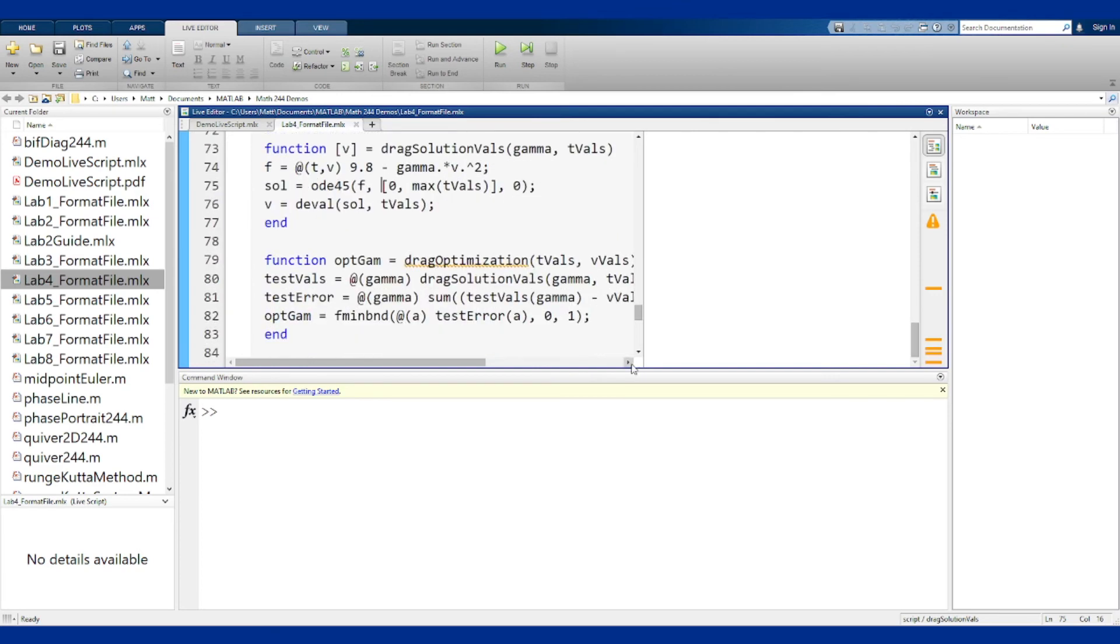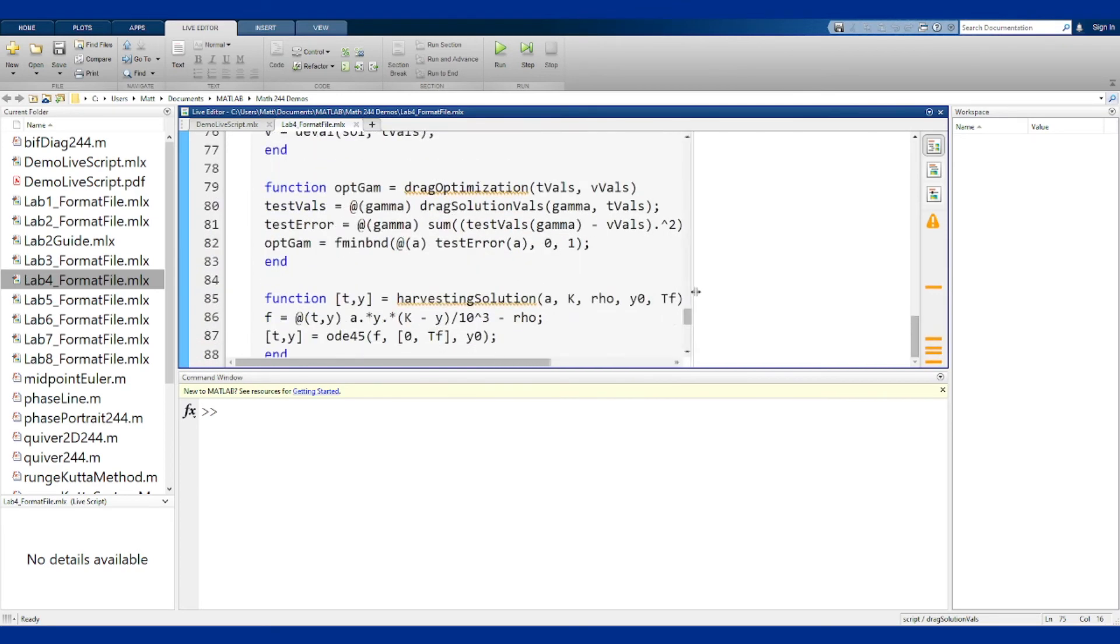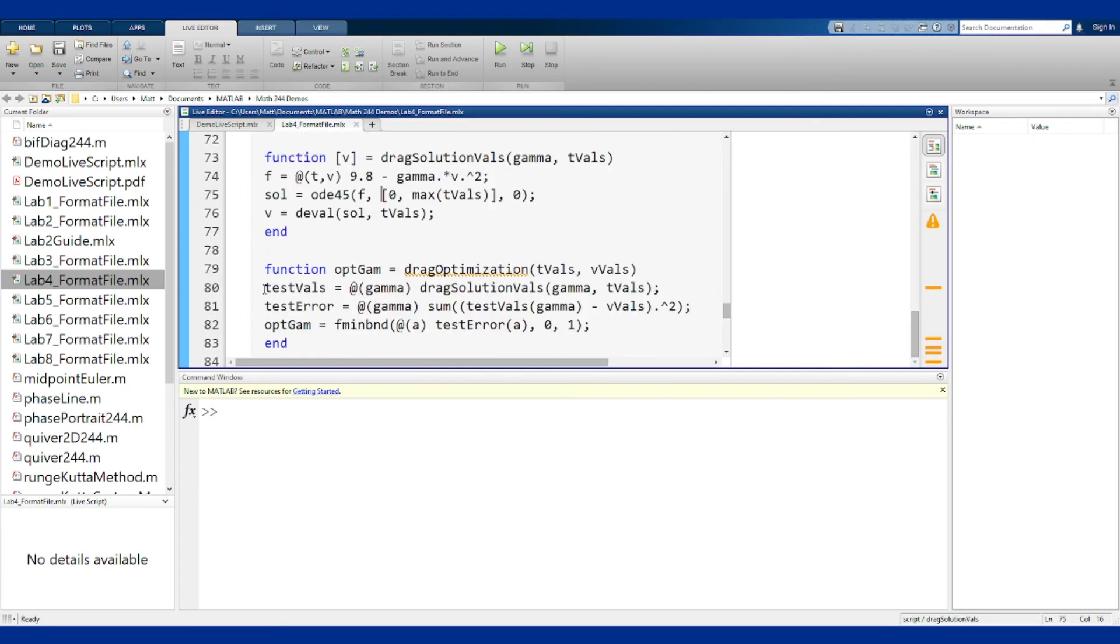Now here's the optimization function. This is the part that's going to do everything we just described. This first line here has you guessing a value of gamma and it's writing this all as functions because in MATLAB we can build this all as anonymous functions and that'll work out easier. So guess a value of gamma, and for that gamma compute the solution to the drag equation at those values.